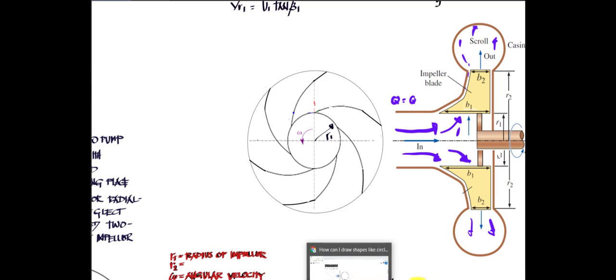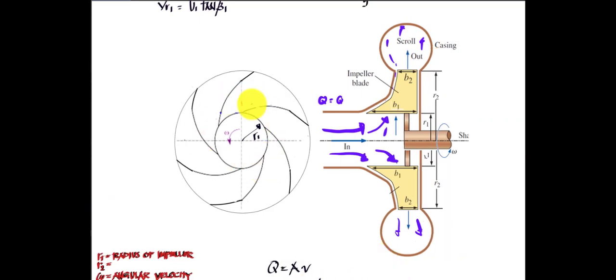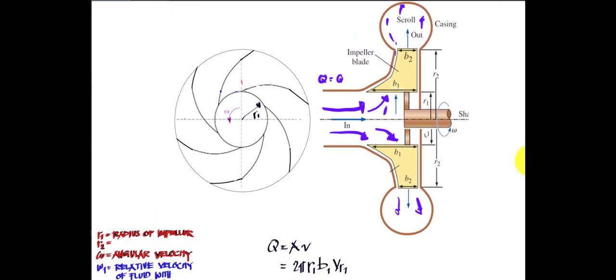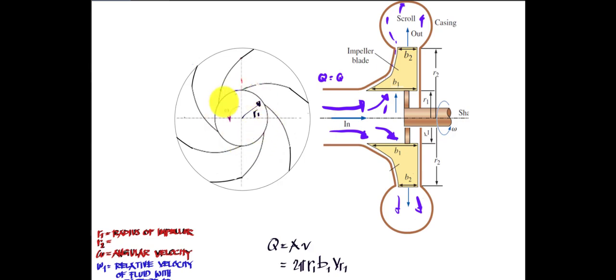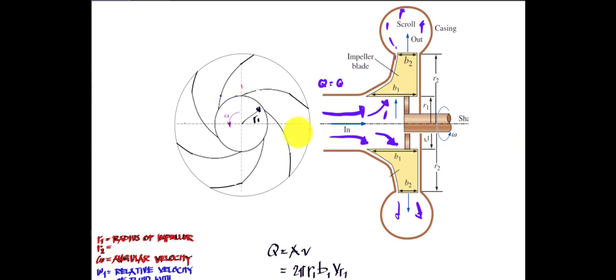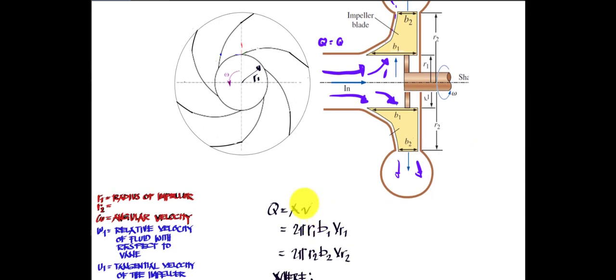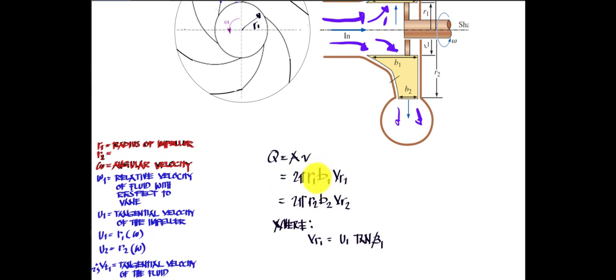For the volume flow rate using the side view of the impeller: the volume flow rate equals the circumferential area times the thickness times the radial velocity. By the continuity equation from conservation of energy, what enters equals what leaves. The area times velocity at inlet equals area times velocity at outlet — the same volume flow rate, but velocity and blade thickness differ between inlet and outlet.